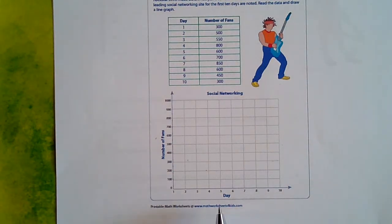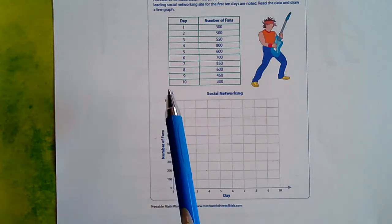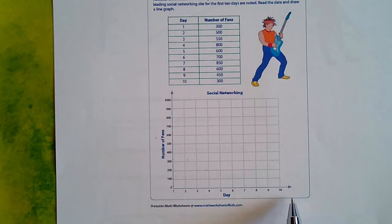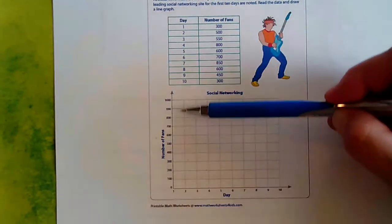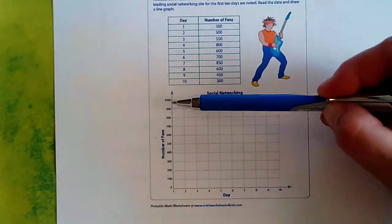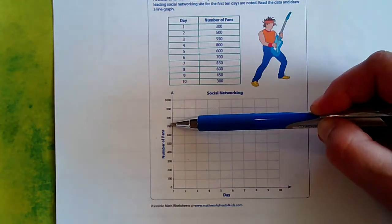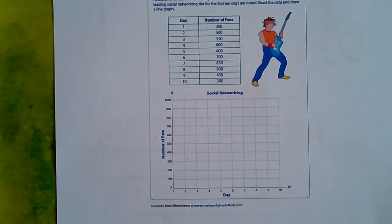Okay, so they have already labeled our empty graph here. This is our X axis and it goes horizontally. They've named that day. This is our Y axis that goes vertical. And these numbers right here in increments of 100 stand for the number of fans that Big Jim had.